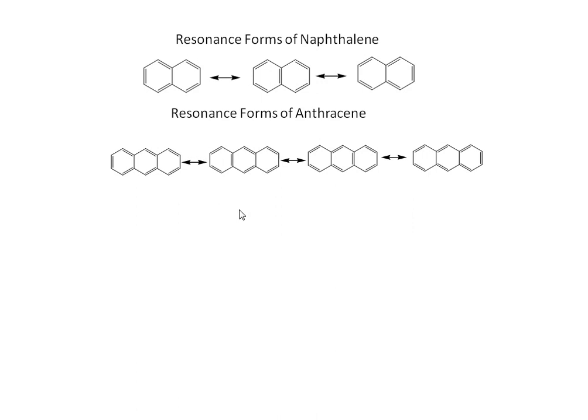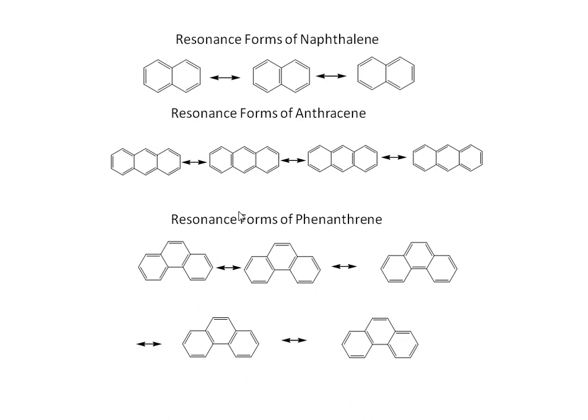We will now discuss the resonance forms of phenanthrene. There are five resonance forms of phenanthrene. It also has three cyclic rings with alternating double bonds, is an aromatic compound, follows electrophilic substitution reaction, is cyclic planar, and has 14 pi electrons. There are seven double bonds — numbered one through seven — and when a double bond shifts, alternate double bonds appear at corresponding positions.